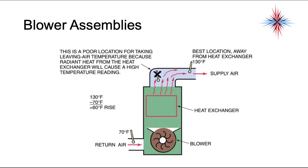If the temperature rise is too high, you need to increase the airflow. If the temperature rise is too low, you need to decrease the airflow. The reason for this is the longer the air stays in the heat exchanger, the hotter it's going to get. So if you increase the speed of the blower, you're going to cool off the air that comes out the supply duct. This works only if your ductwork is set up for the difference in airflow volume. Don't decrease it too much because you still have to move air across the heat exchanger. Temperature rise tells you a lot about what the airflow is doing.